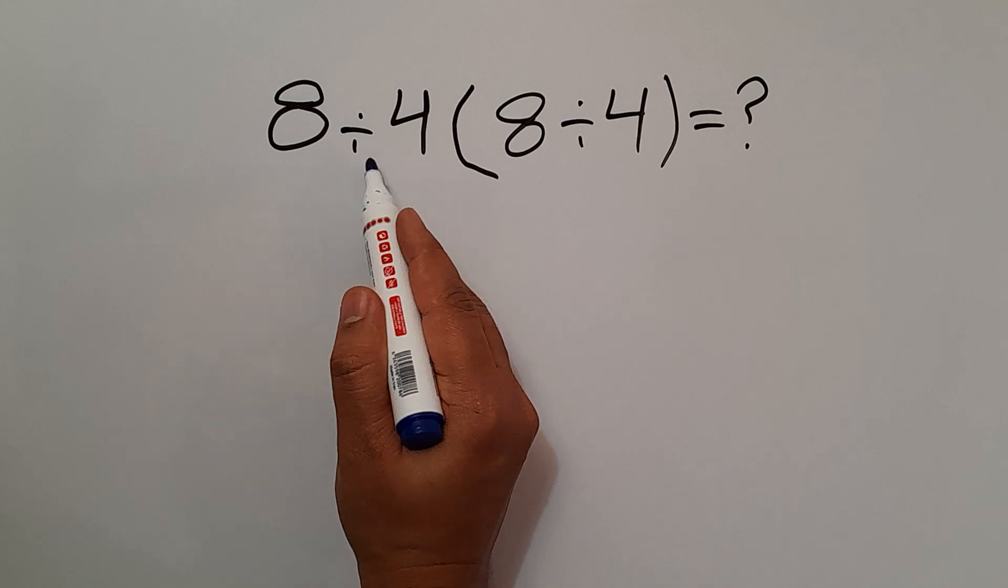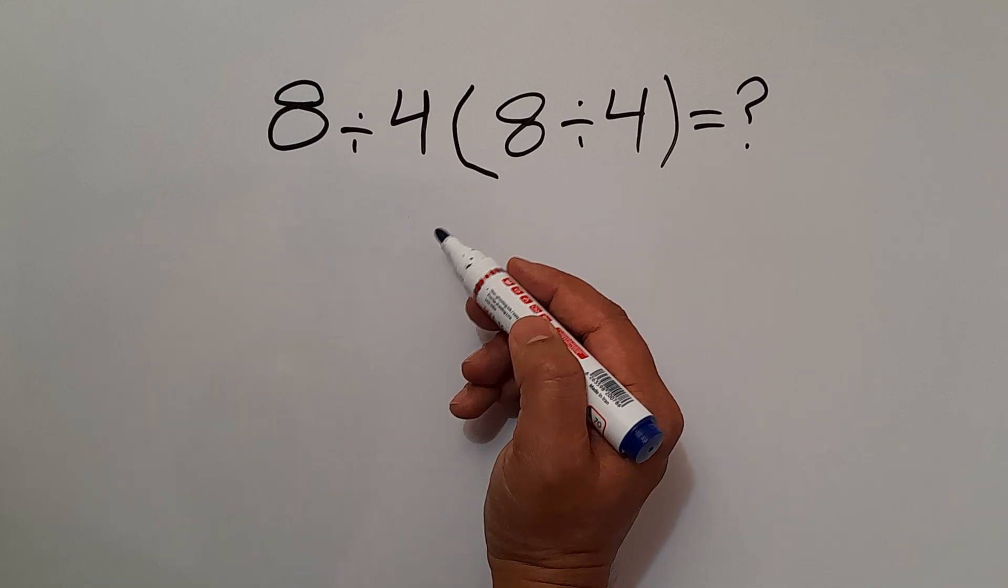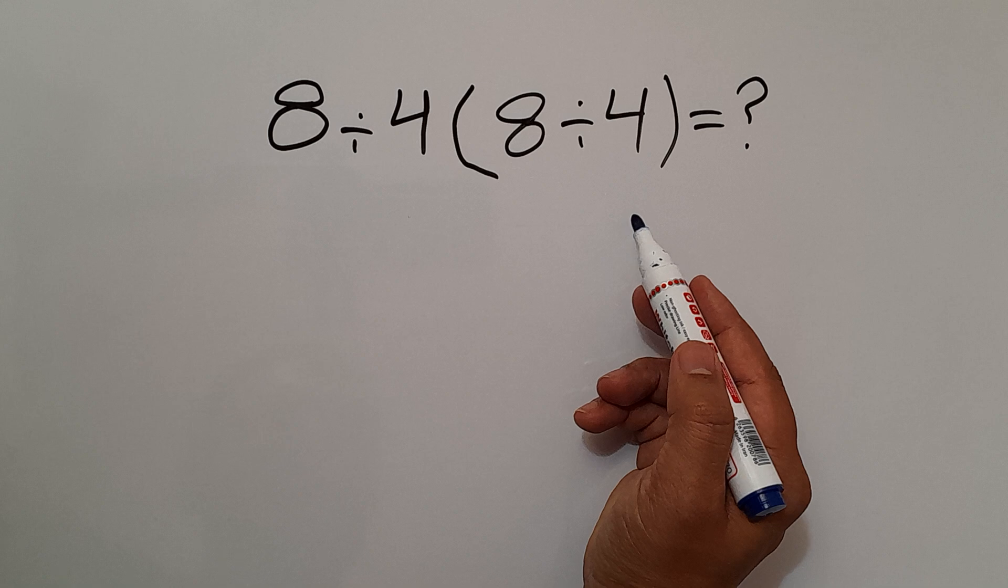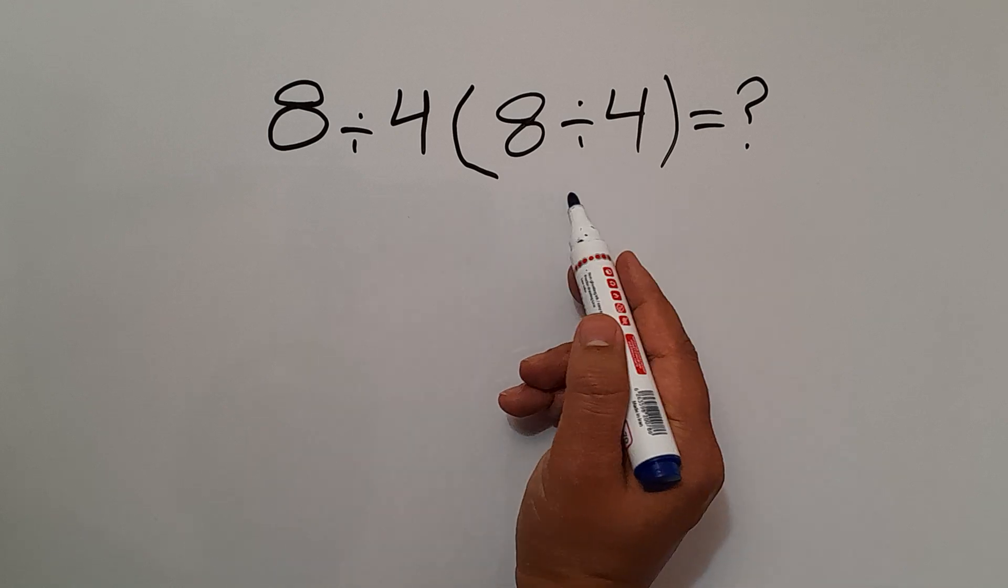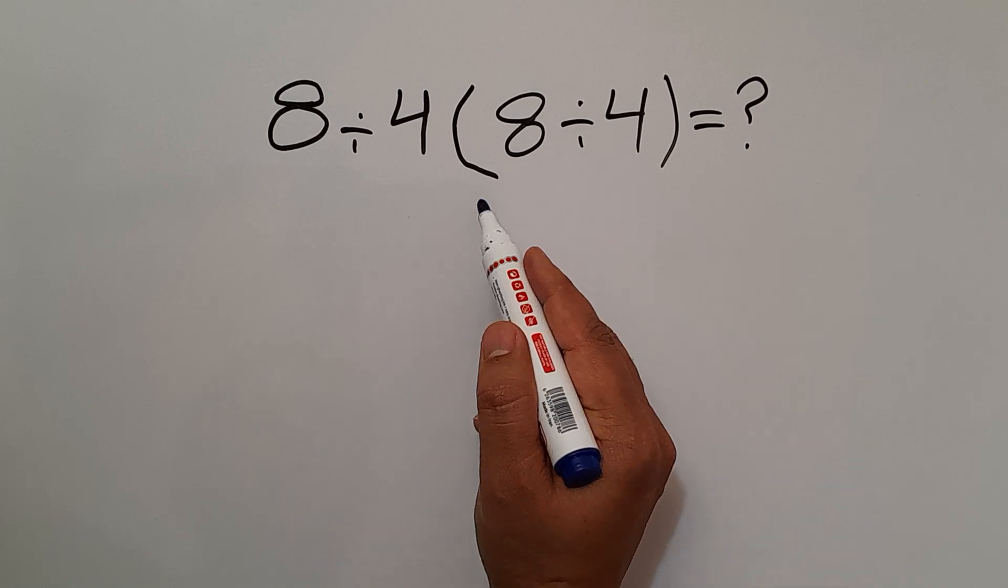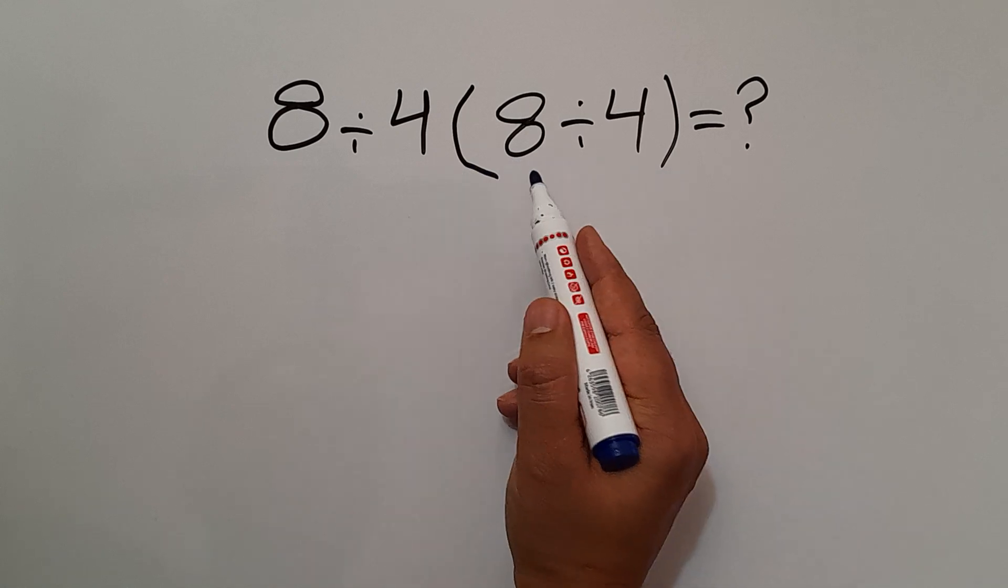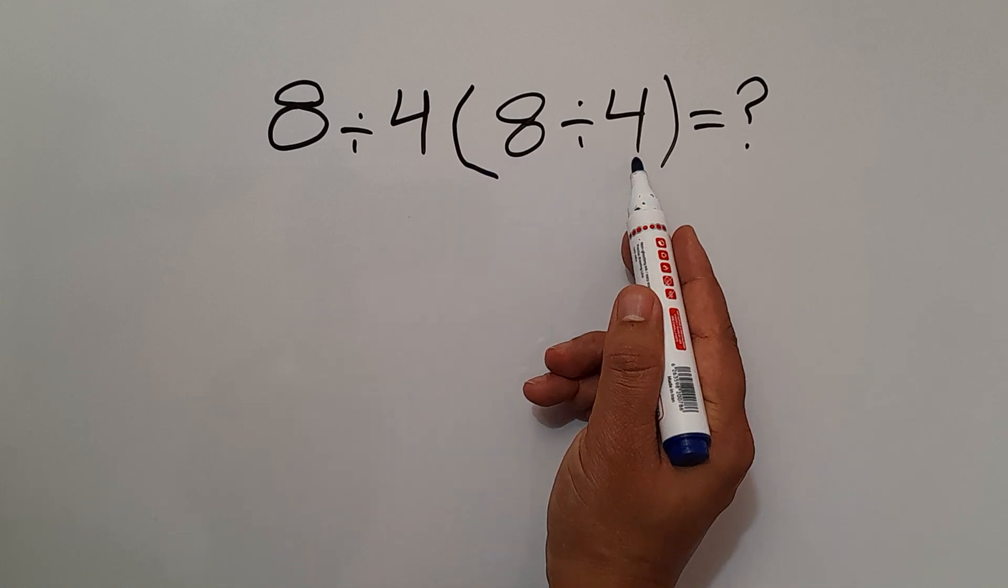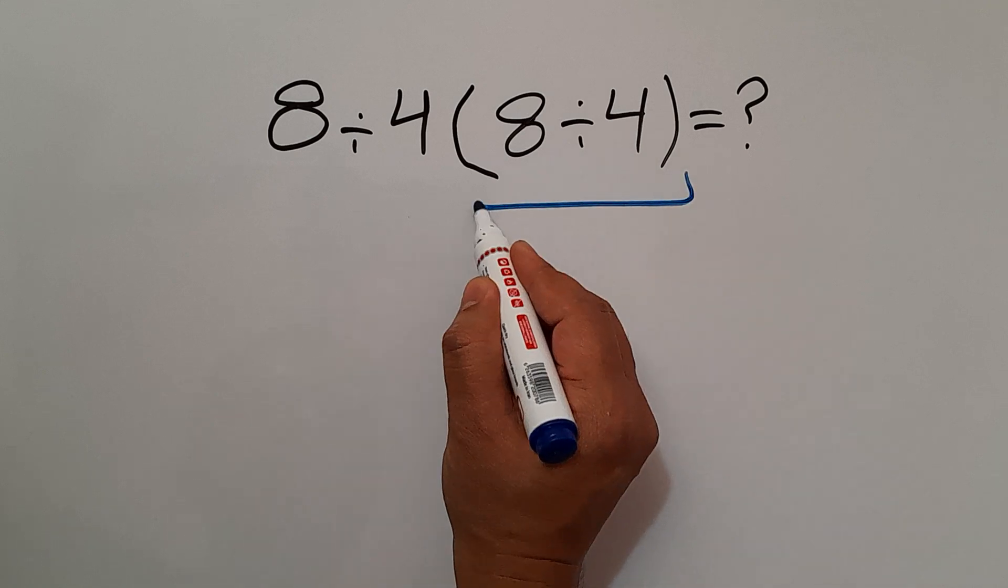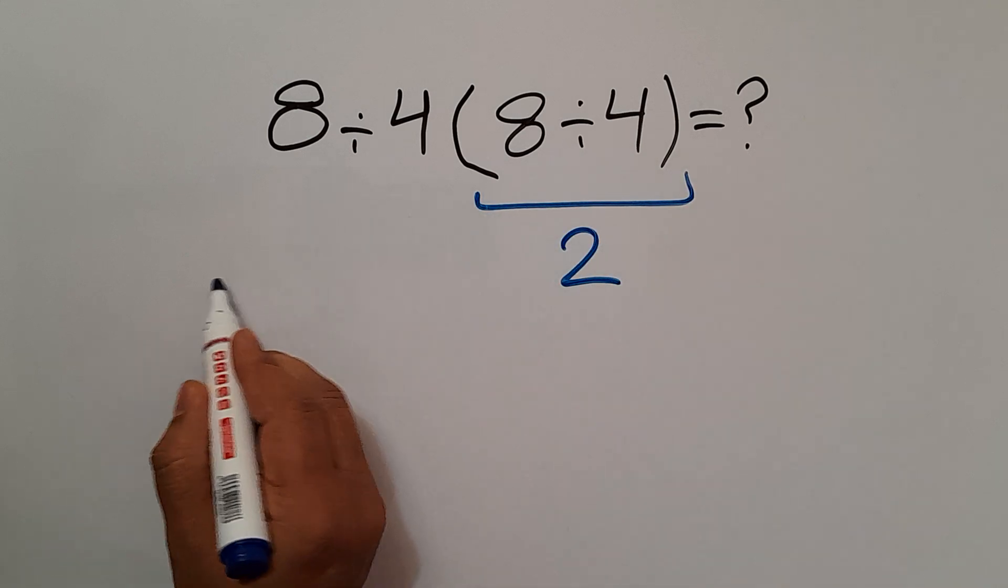As we know, parentheses has higher priority than other operations, so first we have to handle these parentheses. Inside this parentheses, we have 8 divided by 4, which equals 2. So we have 8 divided by 4, then times 2.